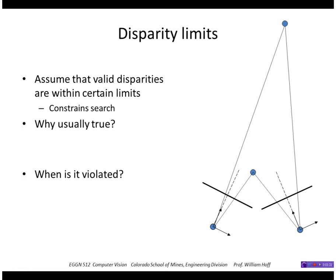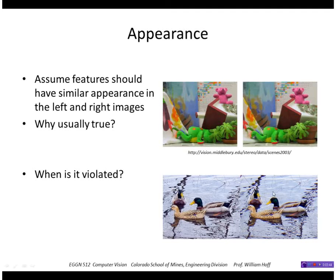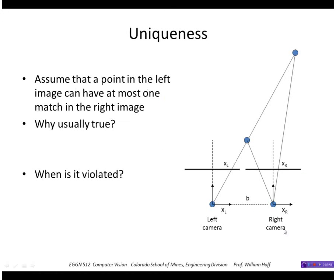This is certainly how human beings do it. For appearance, we can assume that features have similar appearances in the left and right images — a corner in one image looks like a corner in the other. Occasionally that's violated in the real world, especially for surfaces that are not matte diffuse reflective, such as specular reflections. Patterns in water, for example, look very different in the two images. For uniqueness, we assume that a point in the left image can have at most one match in the right image — that's almost always true, except with transparent surfaces where you can see multiple points through a single image point.